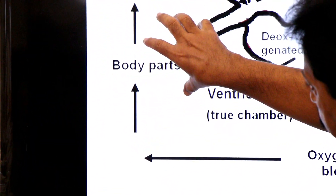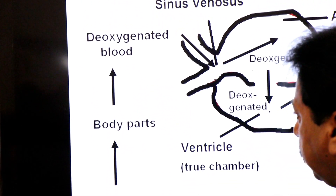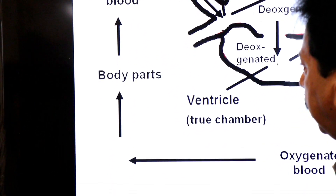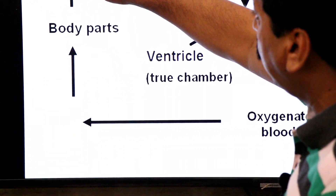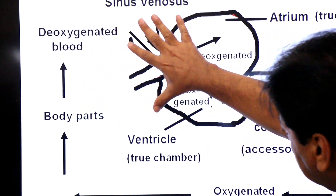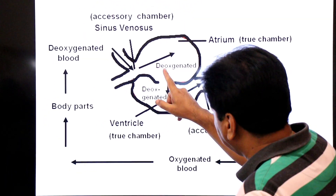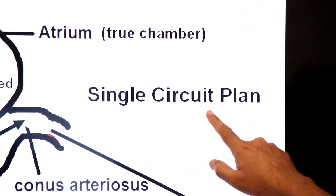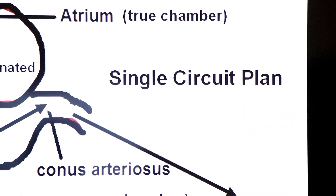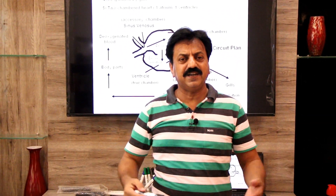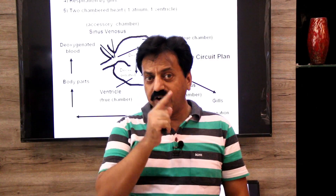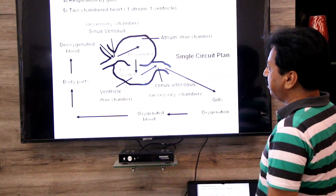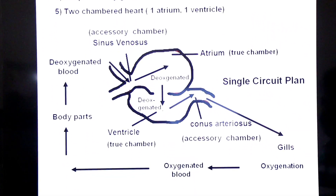The oxygenated blood flows to the body tissues and cells. The tissues consume oxygen, so the blood becomes deoxygenated again and returns to the heart. You can see the whole circulation passes through the heart only once. This is called single circuit plan — when the blood flows through the heart only once during the whole circulation.